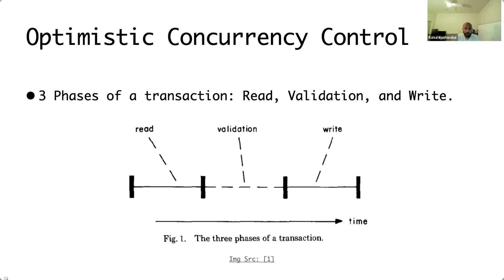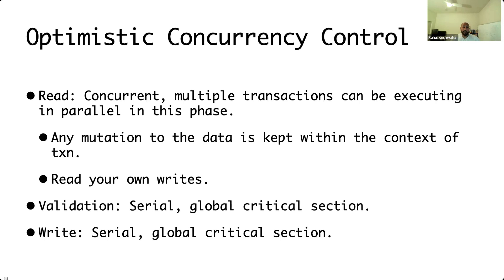First, optimistic concurrency control. As shown in the figure, there are three phases of the transaction: the read phase, validation phase, and the write phase. The read phase is a concurrent phase where multiple transactions execute in parallel. Here, we record the version of each data item we are trying to read or write. This version is used during the validation phase, which is executed serially. Here, we verify that the data items we read have the same version as at read time. If any data item has a differing version, that means some other transaction modified it, and the current transaction must abort. The last phase is the write phase, where we write data back with newer versions — also a serial, global critical section.